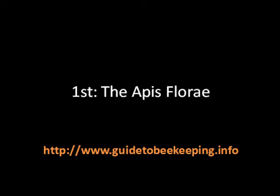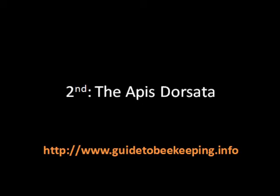Now we can move on to the Apis dorsata. The Apis dorsata is also called the 'rugby' and is characterized by a bigger size when compared to other honeybees. Nonetheless, the Apis dorsata shares some similarities with the Apis florae — the rugby may also abandon its hive because of disturbances, and the Apis dorsata constructs single comb hives like the Apis florae.